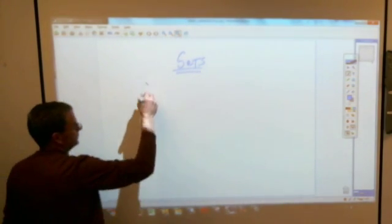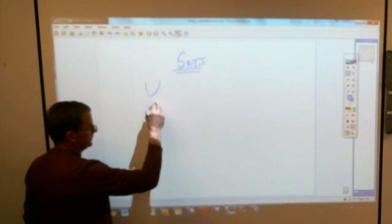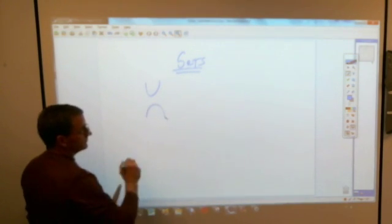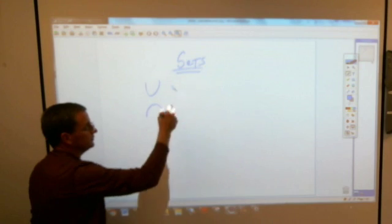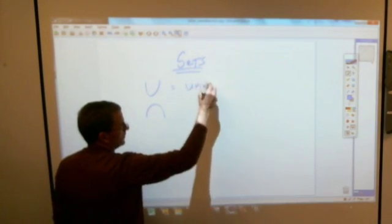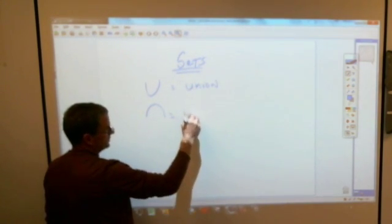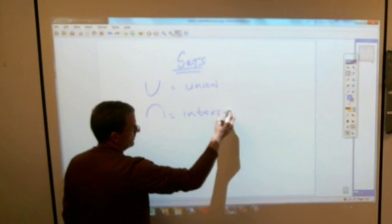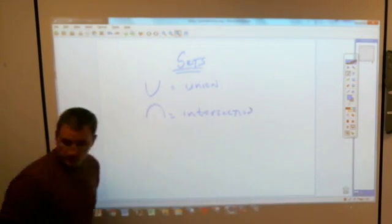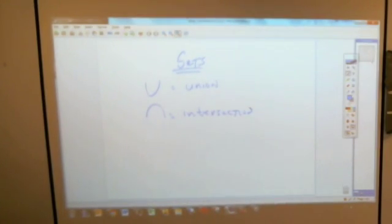Remember you had the U shape and the upside down U shape. The U was the union of two sets, and this was the intersection of two sets of numbers. We'll do an example and then that'll be all we need there.